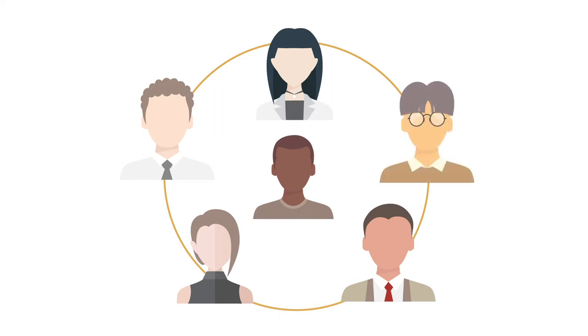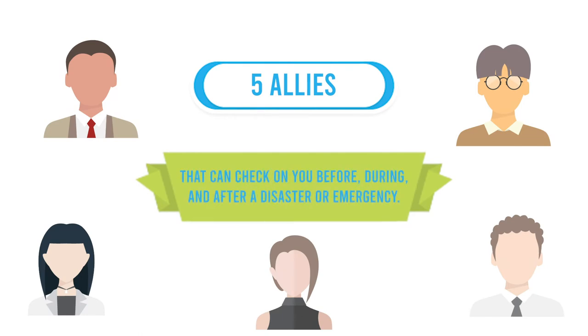Identify five people who will become your trusted allies during a disaster or emergency. Your five trusted allies are people who will check on you and that you can communicate with before, during, and after a disaster or emergency.